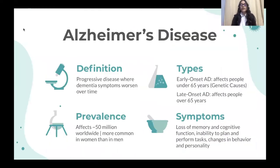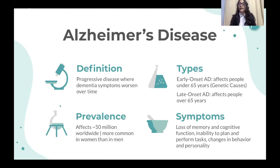Alzheimer's disease is a progressive disease where dementia symptoms worsen over time. There are two types: early onset Alzheimer's disease, which is less common and affects people under the age of 65 years and generally has genetic causes; and late onset Alzheimer's disease, which affects people over the age of 65 years and is more common. Alzheimer's disease as a whole affects around 50 million people worldwide and is more common in women than men.